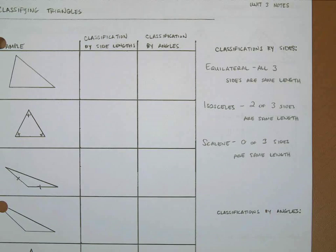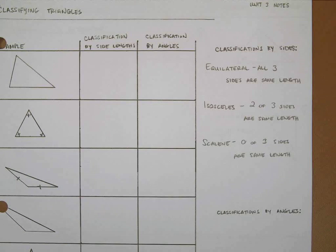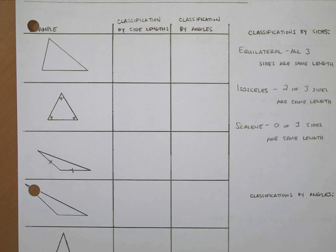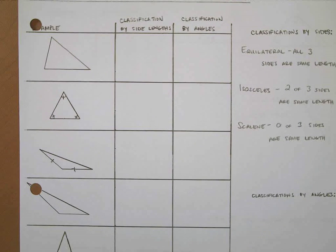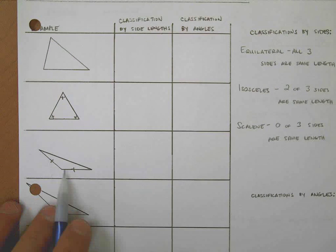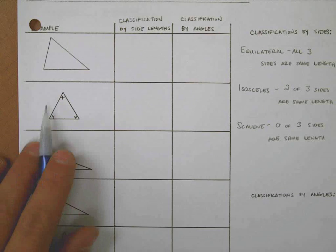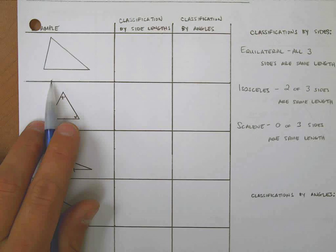Rather than say zero of the three are the same length, we might also say every side has a different, unique length. Now for this video, we're only going to focus on side lengths. When looking at these examples, I'm looking for tick marks. See the tick marks here — those tell us that these two lines are the same length, which is different from up here where there are no tick marks.